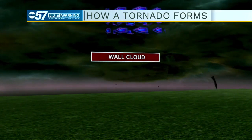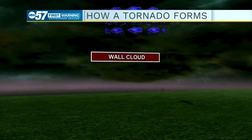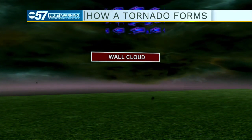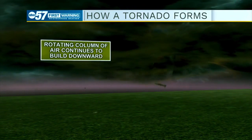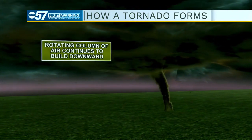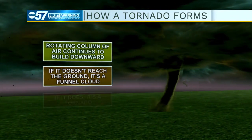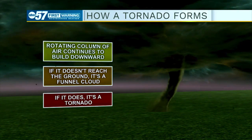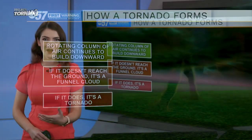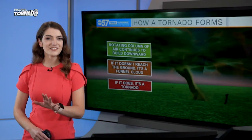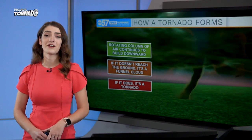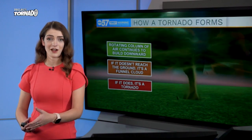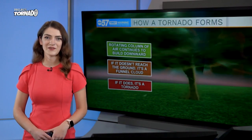A rotating wall cloud has a lower base — a large rotating cloud in the sky — and from these is when we would start to see the formation of tornadoes. We start to see some building that happens back towards the Earth's surface, stretching towards the ground. If it doesn't quite touch the ground, we call that a funnel cloud. If it does touch the ground, that's when we classify it as a tornado.